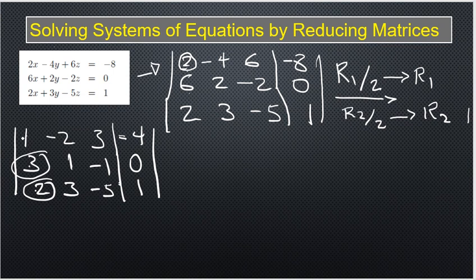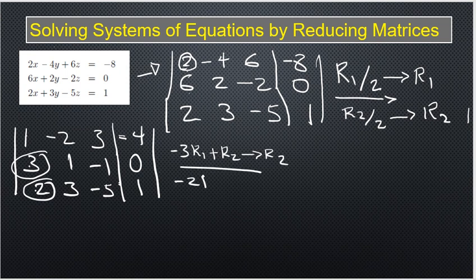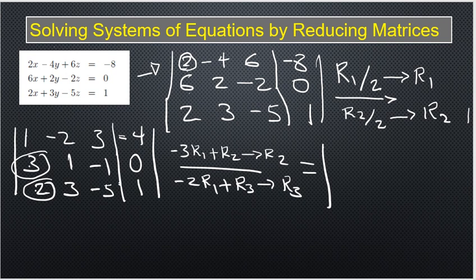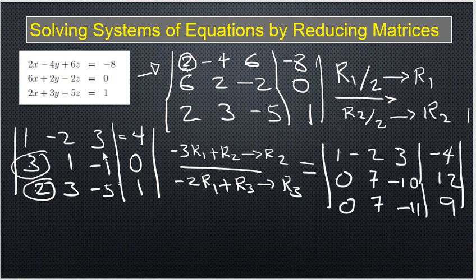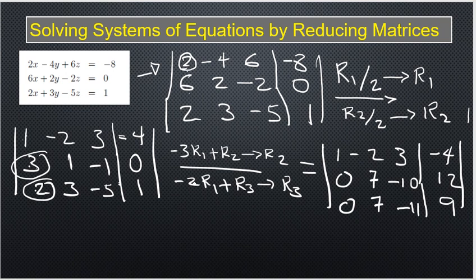Next, we need to make the first entries of R2 and R3 equal to zero. To eliminate the 3 in R2, we compute -3×R1 + R2 → R2. That gives: -3×1+3=0, -3×(-2)+1=7, -3×3+(-1)=-10, and -3×(-4)+0=12. So the new R2 is [0, 7, -10 | 12].